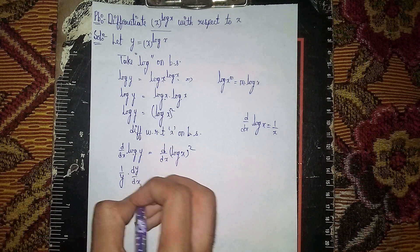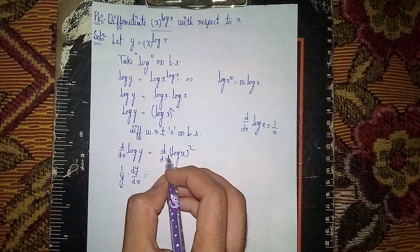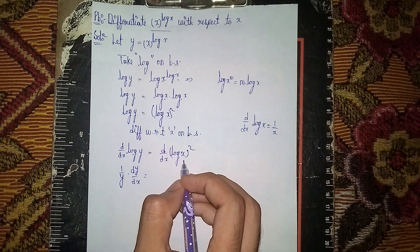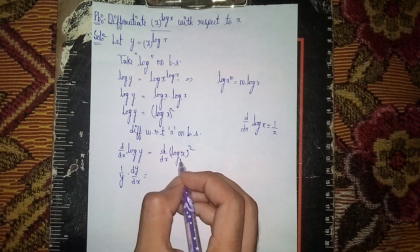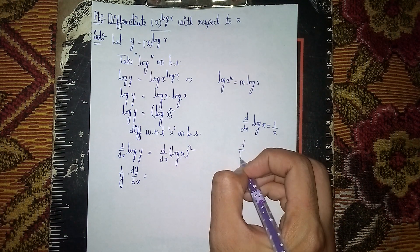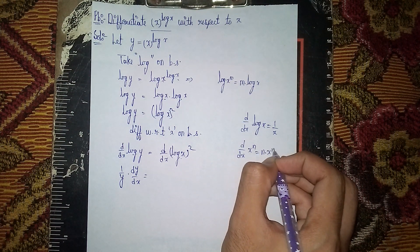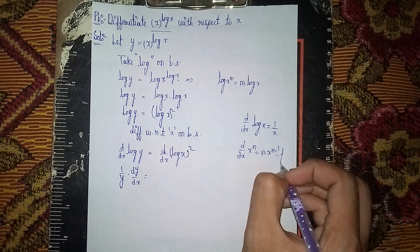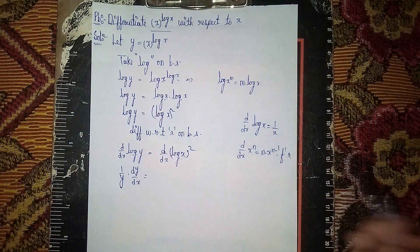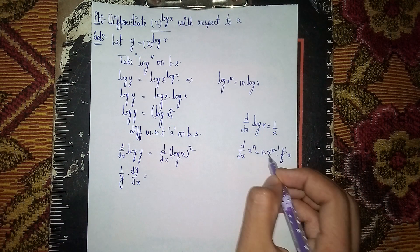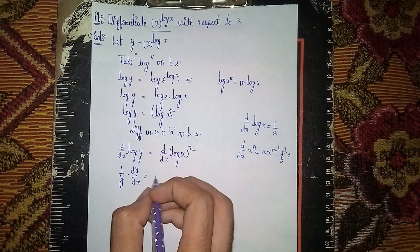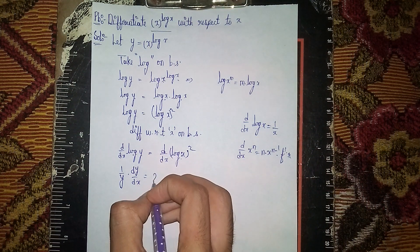On the right side, we use the power rule: d/dx of x^n = n times x^(n-1) times f'(x). For (log x)^2, this becomes 2 times (log x)^(2-1) times the derivative of log x.